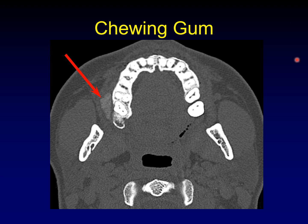For example, chewing gum. This is chewing gum tucked into the cheek, and it's hyperdense compared to all of the soft tissues, but not quite as dense as bone — but it might easily be confused with an osteoma.